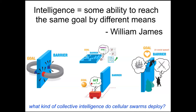In contrast, Romeo and Juliet have long-term planning and abilities to get further from their goal temporarily to overcome physical and social barriers. In between, you have cells that navigate mazes, autonomous vehicles, and various animals. The empirical approach requires making hypotheses and testing specifically what competencies a system has. What kind of collective intelligence do cellular swarms deploy?